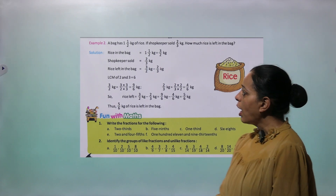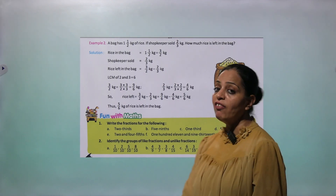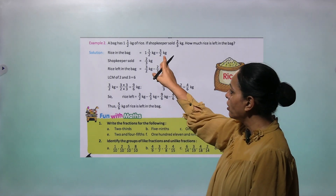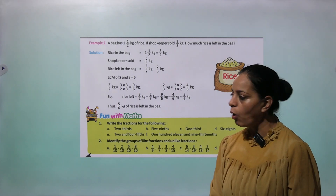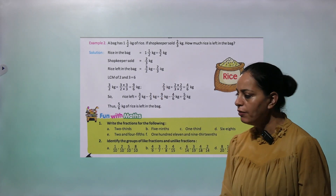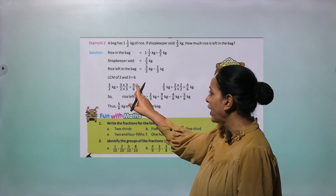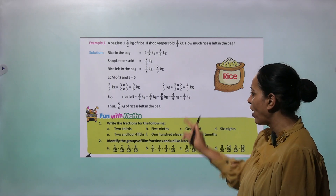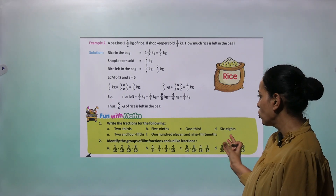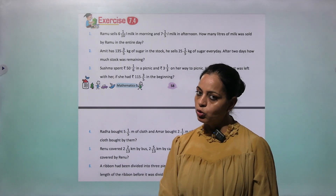Example 2: A bag has 1 and a half kg of rice. The shopkeeper sold 2 by 3 kg. How much rice is left? Rice in the bag is 3 by 2 kg. Rice left equals 3 by 2 minus 2 by 3. Take LCM of 2 and 3, which is 6. Convert to like fractions: 9 by 6 minus 4 by 6 equals 5 by 6 kg. So 5 by 6 kg of rice is left in the bag. Exercise 7.4 is also based on word problems — you can try it.